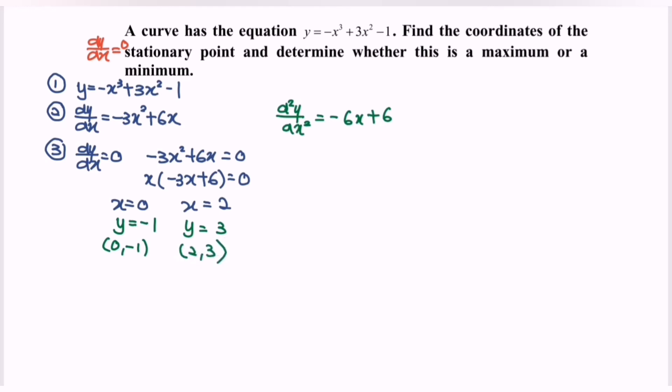Step number 4. Test the value by using the second derivative test. So if the value of x = 0, then we will have second derivative is equal to 6.